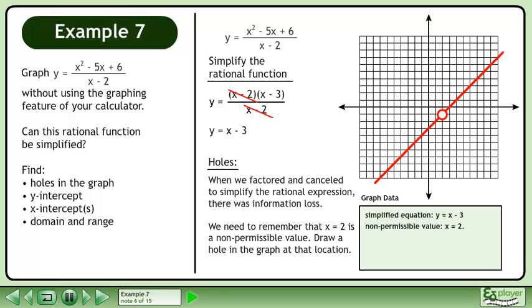When we factored and canceled to simplify the rational expression, there was information loss. We need to remember that x equals 2 is a non-permissible value. Draw a hole in the graph at that location.